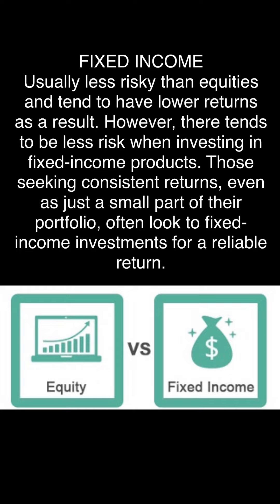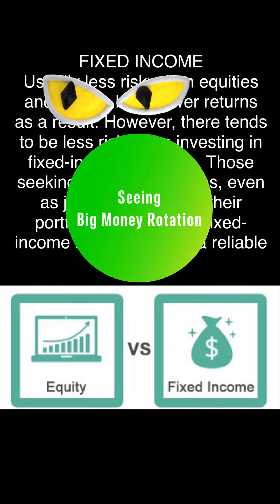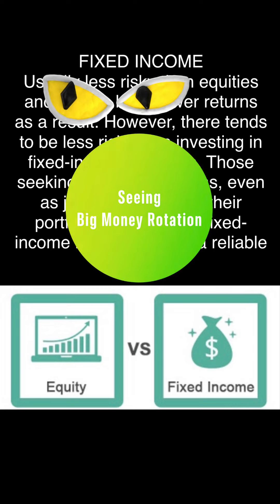That's why individuals like fixed income, especially during volatility and unpredictable market conditions. Those seeking consistent returns, even as just a small part of their overall portfolio, often look to fixed income investments for reliable returns. This is what we're talking about when we see big money rotating out of equity into fixed income, especially in a downward trending or low-sentiment long investment market.